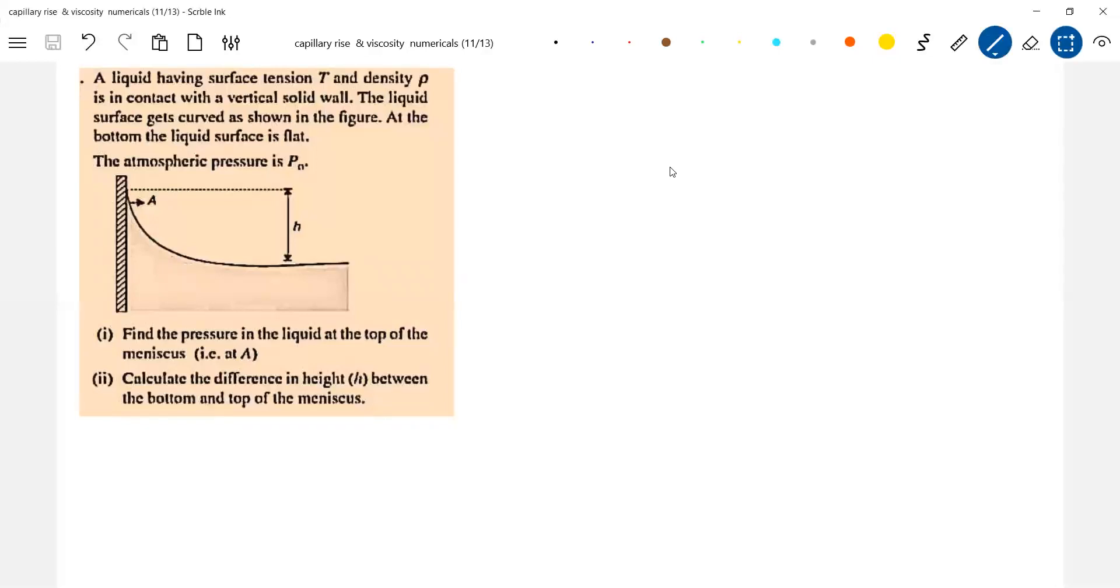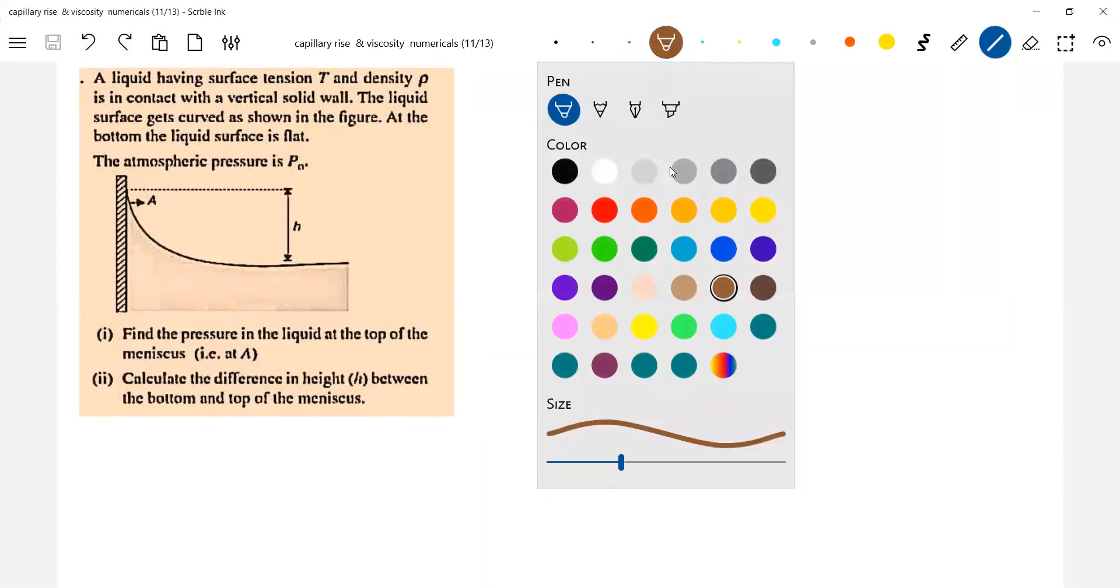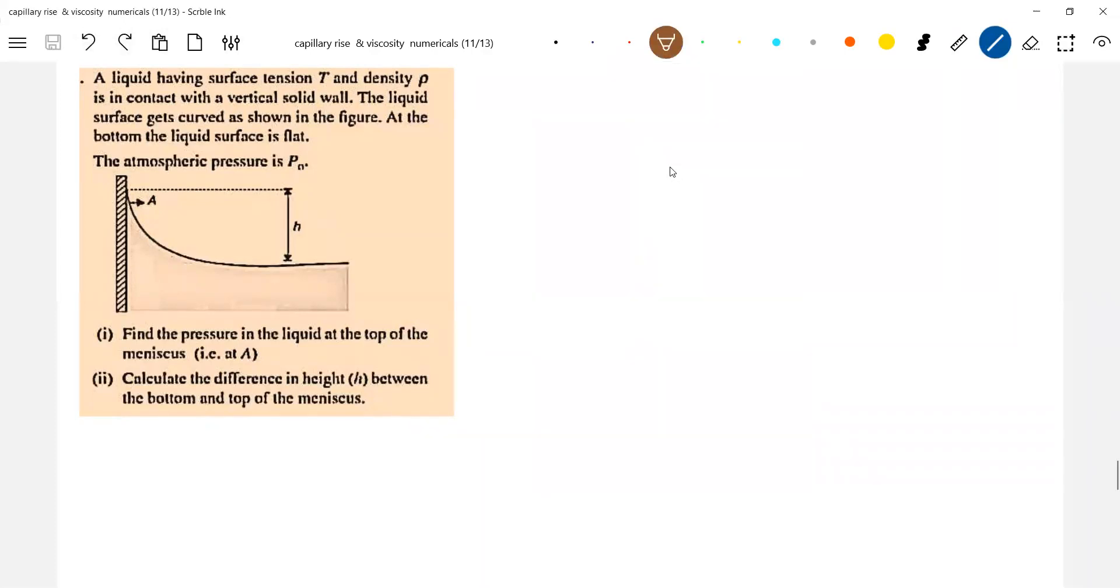So there's a meniscus. I think this came in that particular thing, there was a correction. Okay, I just brought it once again. This is a wall.